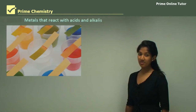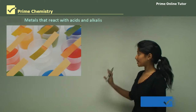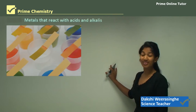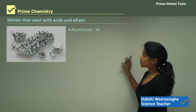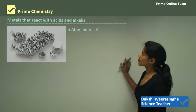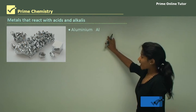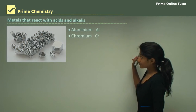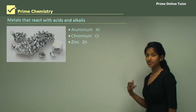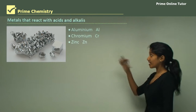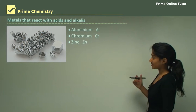Hello everyone. Today we will be learning about the metals that react with acids and alkalis. First we'll look at what these metals are: aluminium, chromium, and zinc. These are the three metals that react with both acids and alkalis.